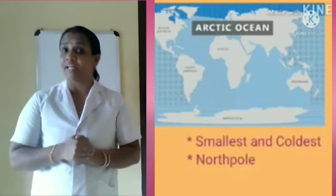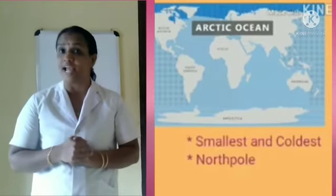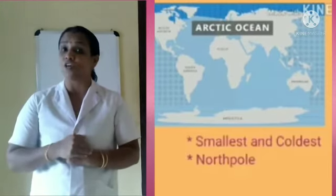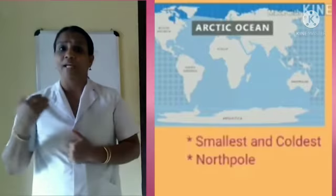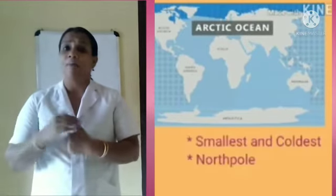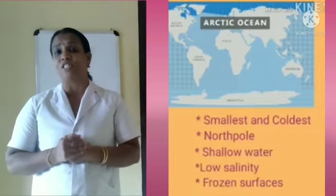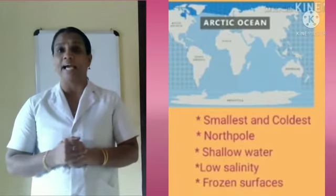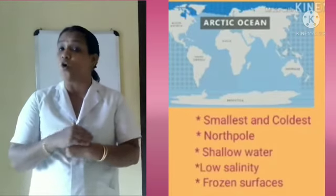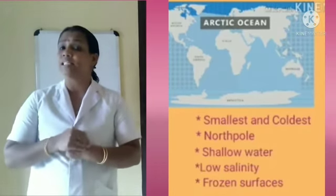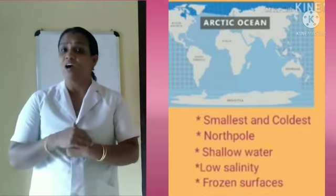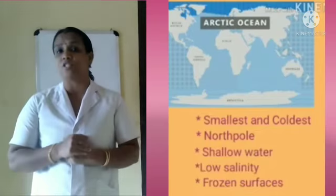Next we see the fifth ocean, the Arctic Ocean. The Arctic Ocean is the smallest and coldest of all the oceans. It is situated in the North Pole. It remains frozen for over 6 months a year. Shallow water, low salinity, and frozen surface are the major features of the Arctic Ocean.